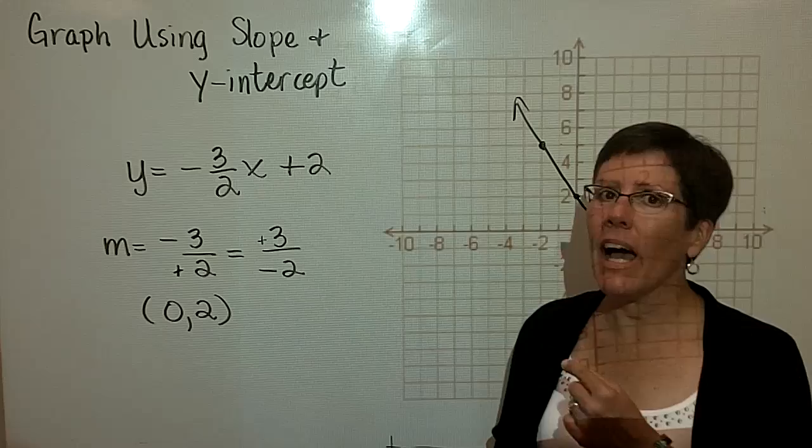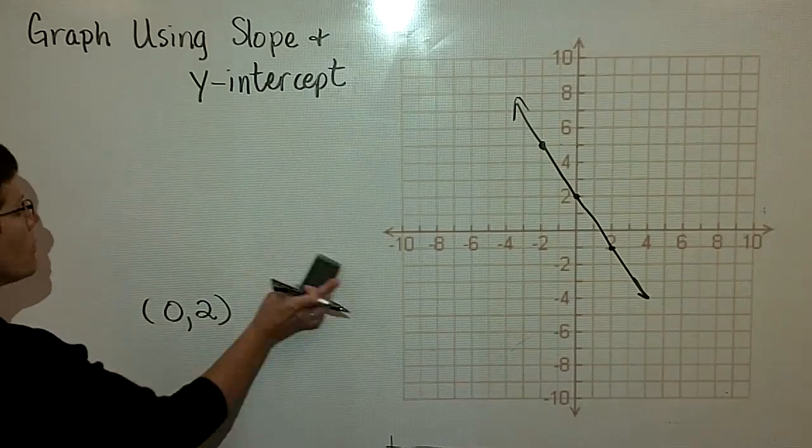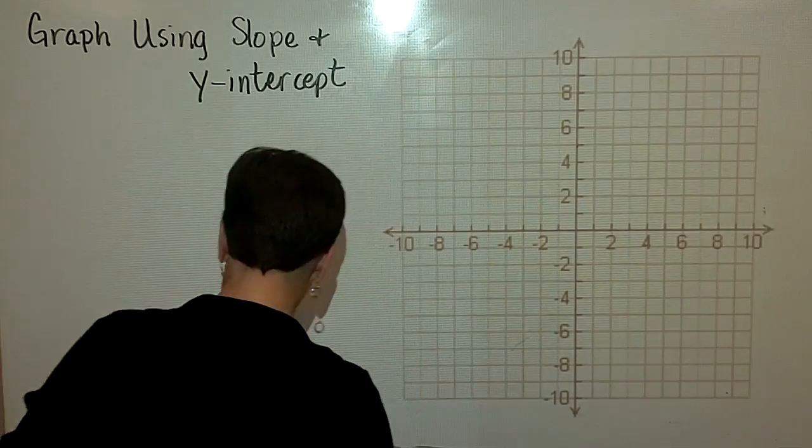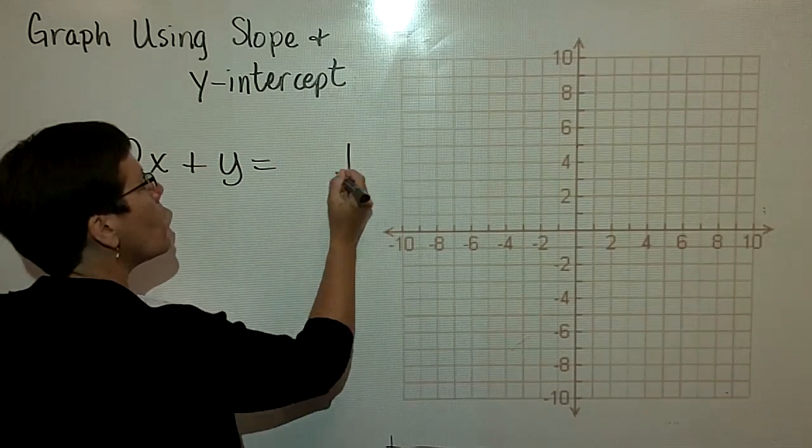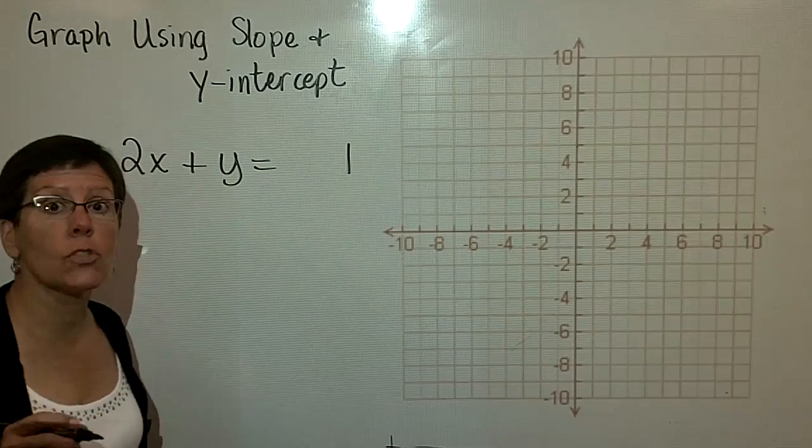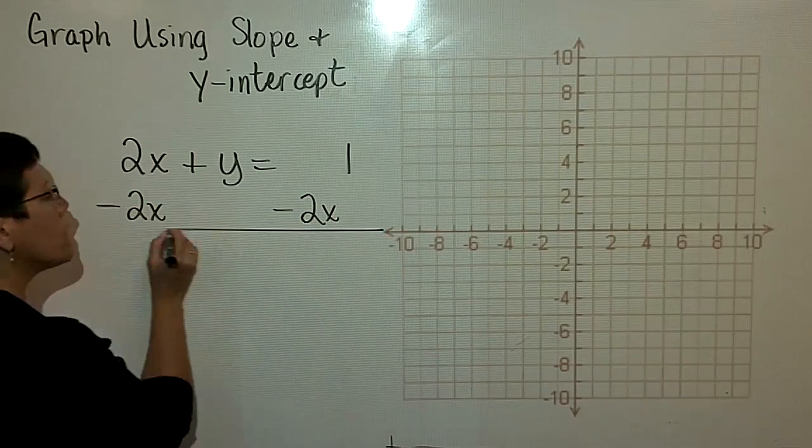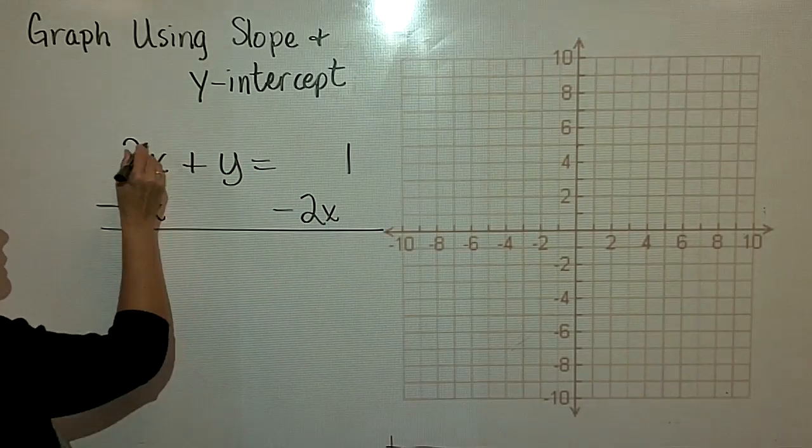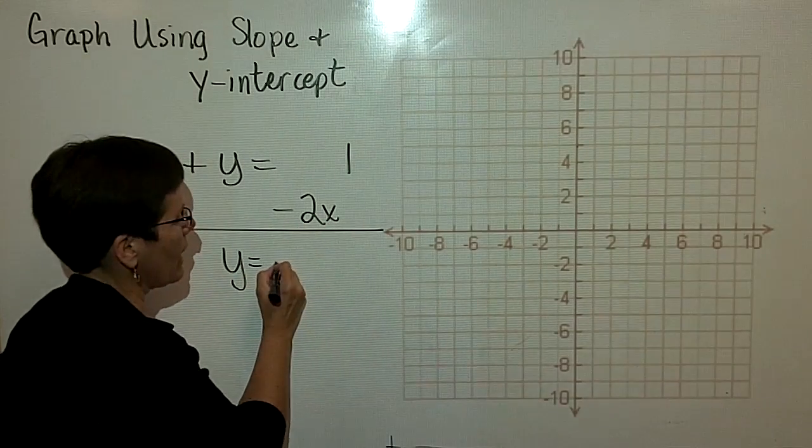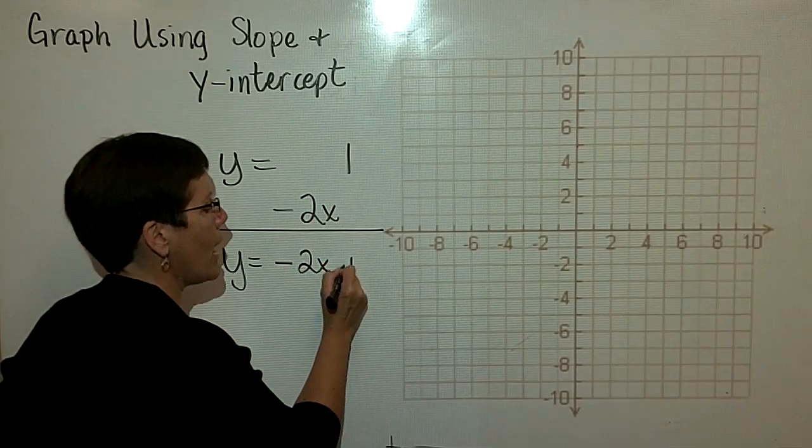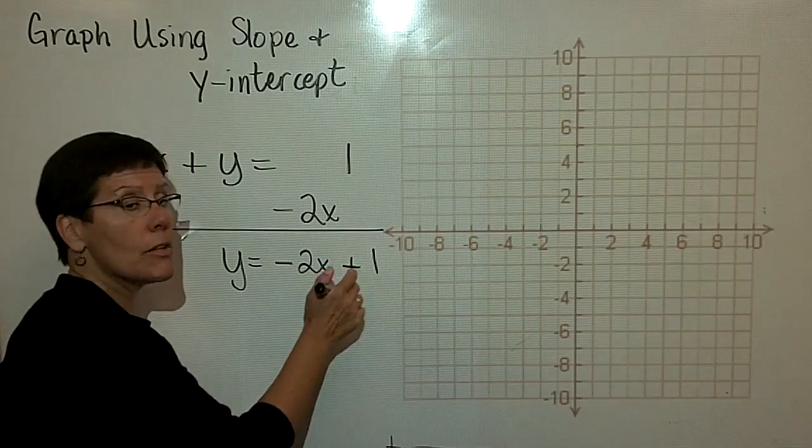If an equation is not in slope-intercept form, I get it that way, because I love graphing linear equations in this form. So if I don't give it to you in this form, please make it happen for you. So I have 2x + y = 1. And I want to get y alone, so I'm going to solve this equation for y by subtracting 2x from both sides of this equation. That gets rid of the x term over here, and y is all alone.